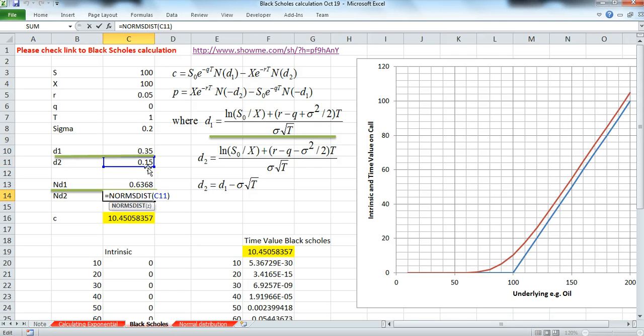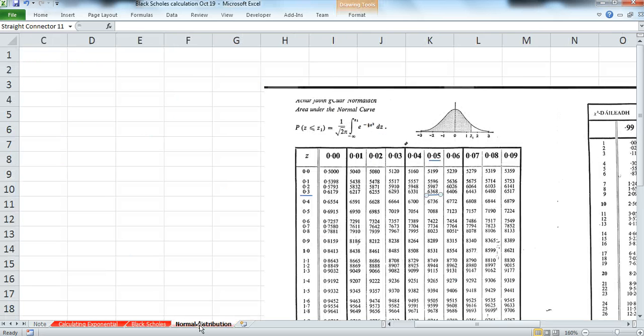Norms dist 0.15 is equal to 0.5596 and the value in the tables come down to 0.1, go across to 0.05 and we read 5596.